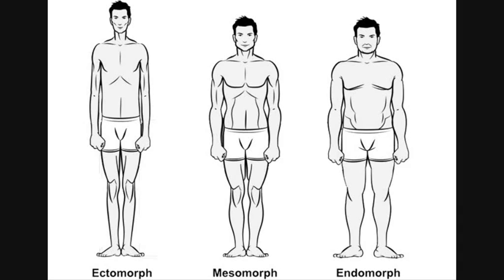Endomorphs can make really impressive muscular gains. However, to get their goal physique they may need to do some cardio to cut down the fat. A plus side of their physique is they usually have quite wide frames, and this means they have more space to build muscle and fill out their physique.